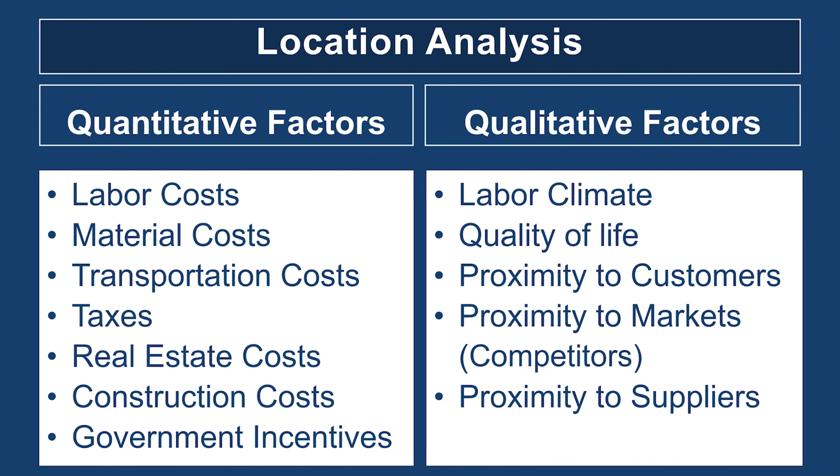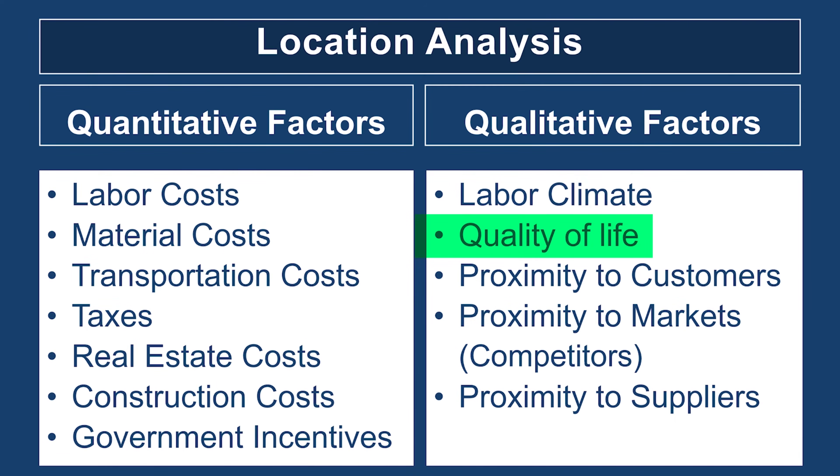We then turn to qualitative factors in conjunction with quantitative factors. We look at the labor climate — not just the labor cost, but the climate. Is there talent in this specific area, or is it going to be hard to find people to do the work? We look at the quality of life: what are the school systems like, what is the crime rate? These are things we have to look at when making a decision to put a specific facility in a location.